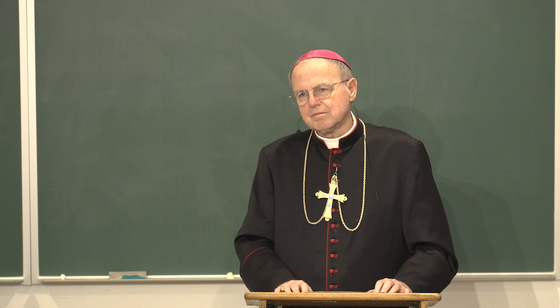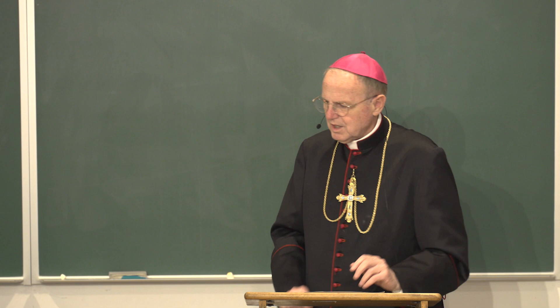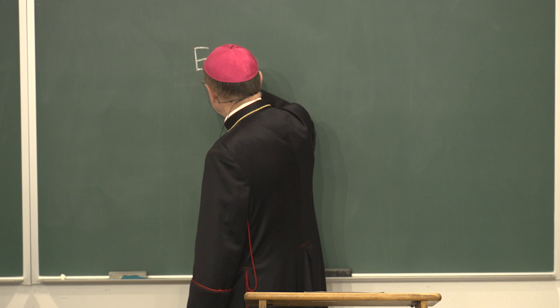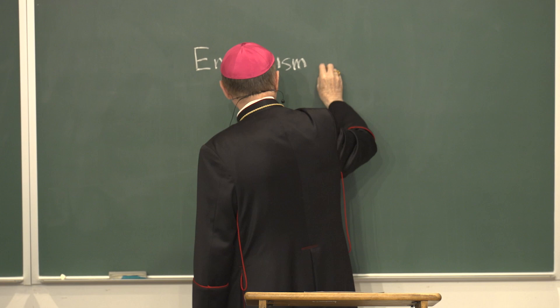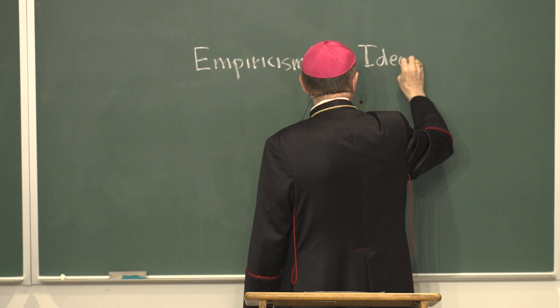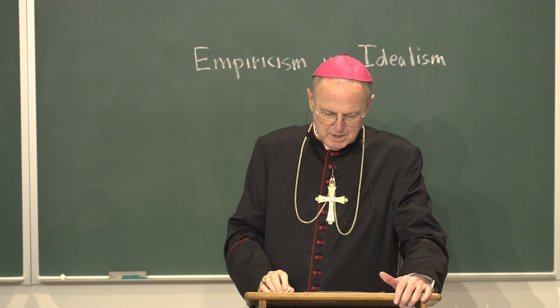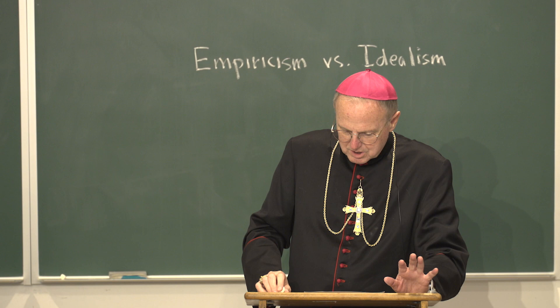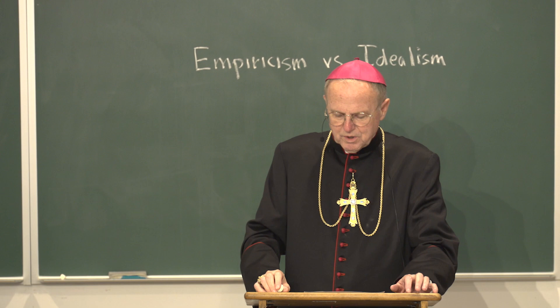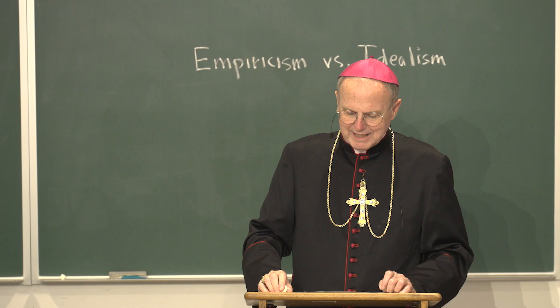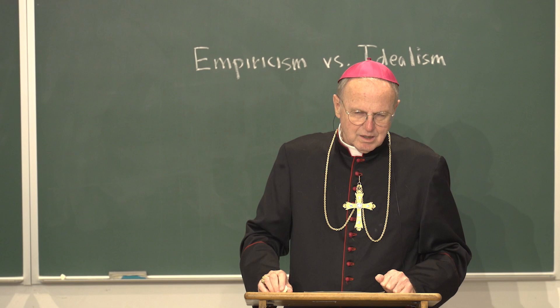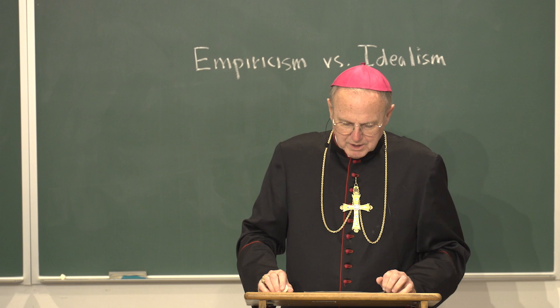In modern philosophy there is a general theme: empiricism versus idealism. These are the two main errors of modern philosophy, and they are opposed to one another. But before you can understand that, we have to talk about human knowledge. Human knowledge is a marriage, in a certain sense, of subject and object. The subject is the knowing faculty — the intellect. The object is the thing as it exists in reality. These two things must come together in knowledge.